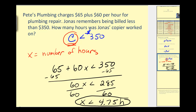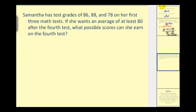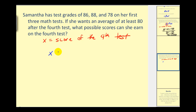Samantha has test grades 86, 88, and 78 on her first three math tests. If she wants an average of at least 80 after the fourth test, what possible scores can she earn on the fourth test? To find the average of the four tests, we add them up and divide by 4. If we let X equal the score of the fourth test, the average would be (X + 86 + 88 + 78) divided by 4, and she wants her average to be at least 80, meaning greater than or equal to 80.